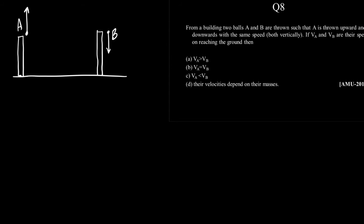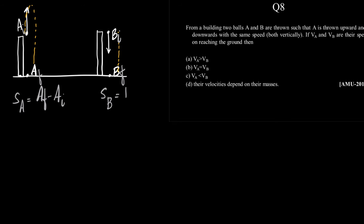The ball A will eventually come down here, and B will also come down. The only difference is A will travel a longer path whereas B will travel only the direct downward path. Now let us call these positions as A-initial, A-final, B-initial, and B-final.